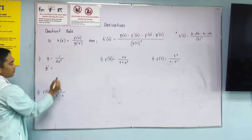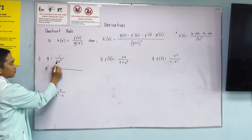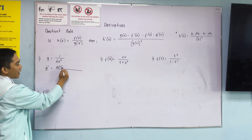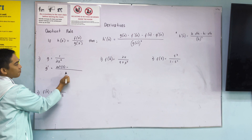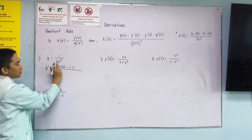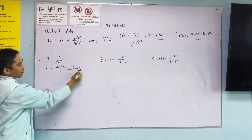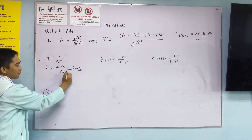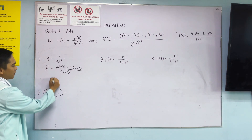g prime is equal to: low — our denominator, 2x cubed — times the derivative of the constant, which is 0, minus high, which is 1, times the derivative of the denominator, 6x squared. All over 2x cubed squared.